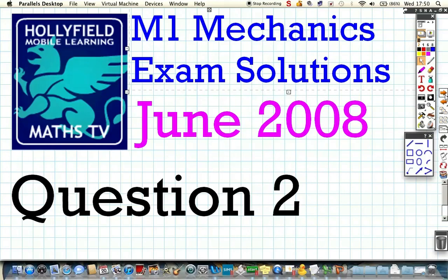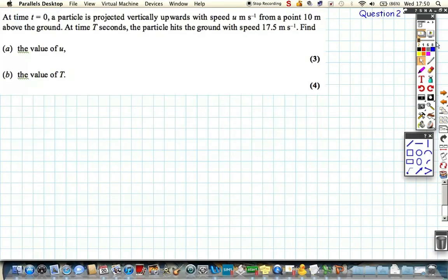So here we are, question 2 of June 2008, the Mechanics paper. And the first thing to start is probably just draw ourselves up here, just a little sketch about what's going on. So let's assume our particle starts here, which is 10 metres above the ground.